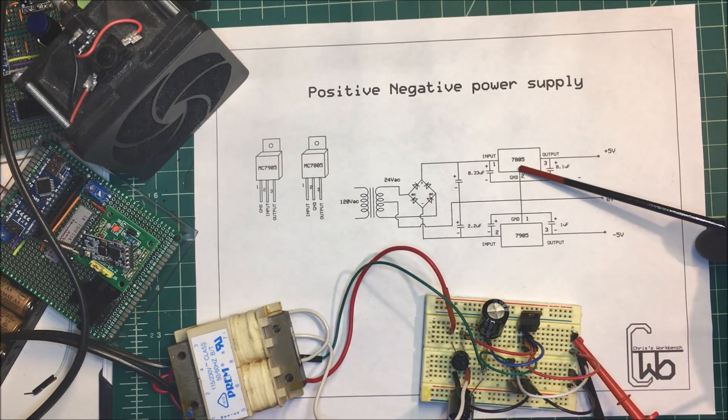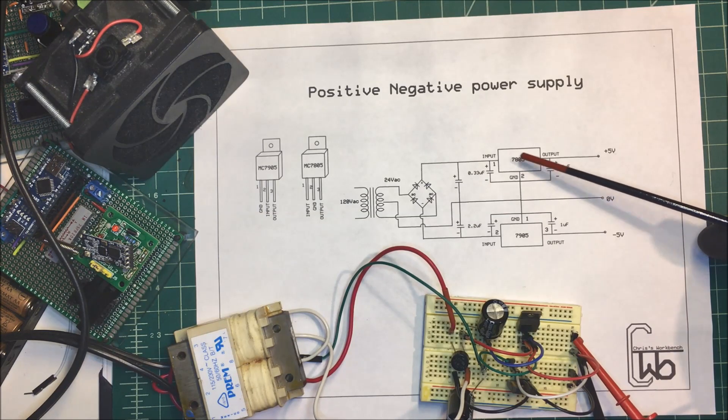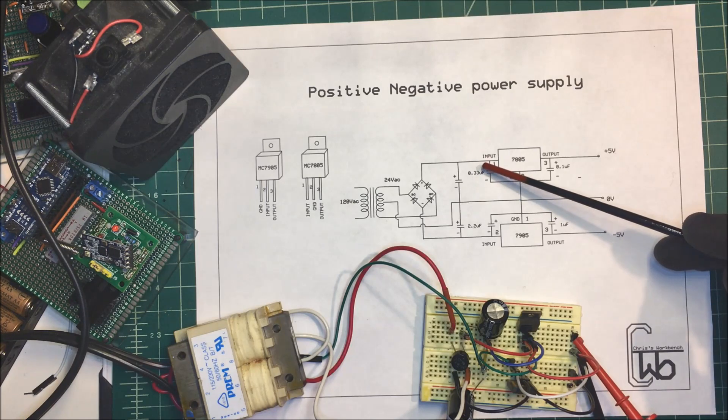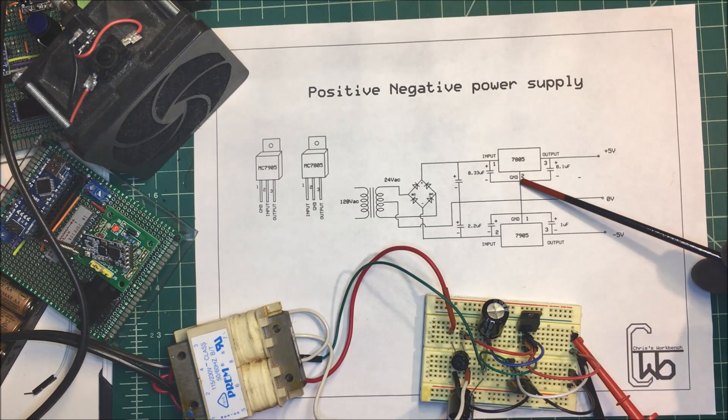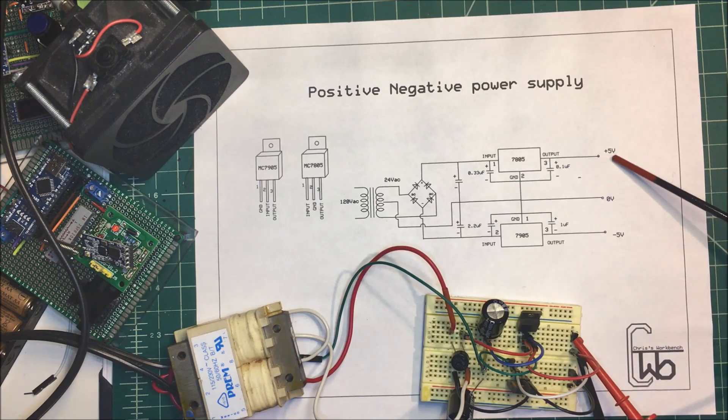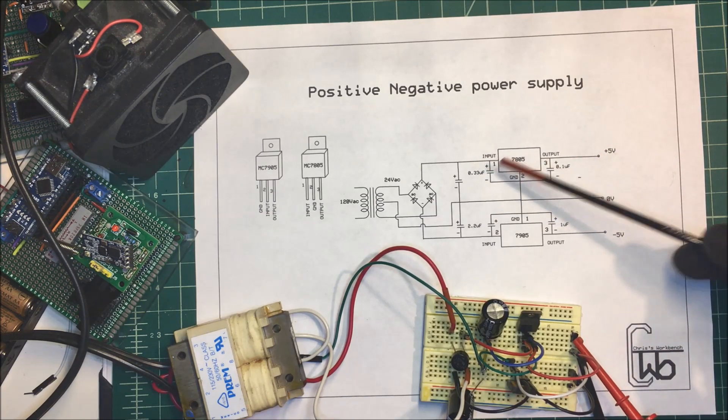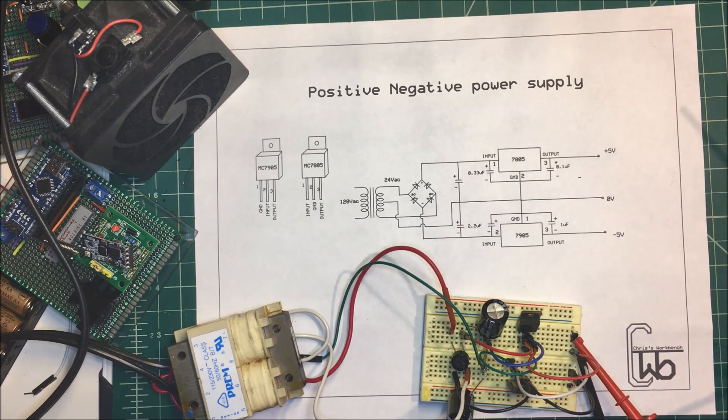This is actually an L7805, and it's just a 5 volt voltage regulator. Now on these, if you put this side here to positive and the ground goes to negative, you'll get 5 volts positive out over here. So you can put between say 8 and 12 volts here and you'll get your 5 volts out over here.